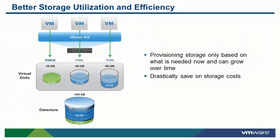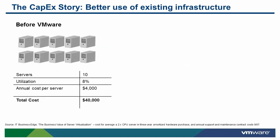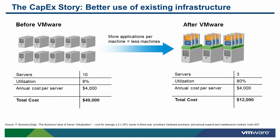With a technology called thin provisioning, storage space is much better utilized. The virtual machine will only utilize space required on disk for what is utilized inside the guest operating system. It's also very easy to convert virtual machines between thick and thin format. You can make better use of existing infrastructure. In this quick example, 10 physical servers are reduced to only 3 physical servers. This represents a very conservative consolidation ratio of about 3 to 1, and ratios around 8 or 10 to 1 are typical. CapEx savings are just the beginning of the story.